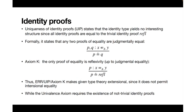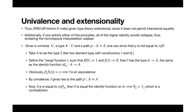There is something called uniqueness of identity proofs, which states that for two proofs of equality — two terms of an identity type — they are judgmentally equal. Equivalently, any proof of the identity type is judgmentally equal to reflexivity. This holds in extensional type theory and collapses all non-trivial proofs of identity to the reflexivity term. The univalence axiom, by contrast, requires the existence of non-trivial identity proofs.